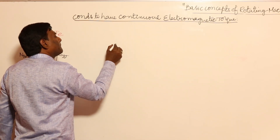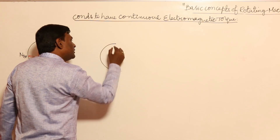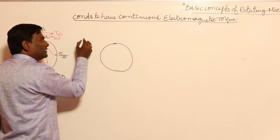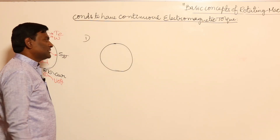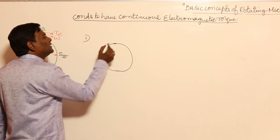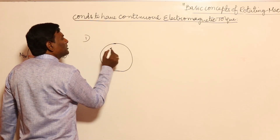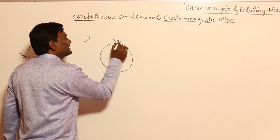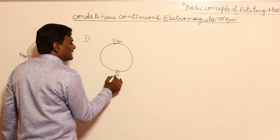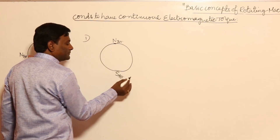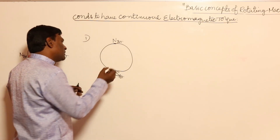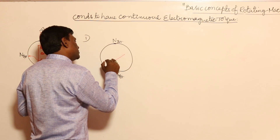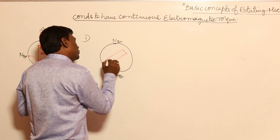In order to maintain continuous electromagnetic torque, there are two conditions. First condition: for example, if the stator is producing two poles - N pole and S pole of the stator - but the rotor is producing four poles, let us analyze what happens.